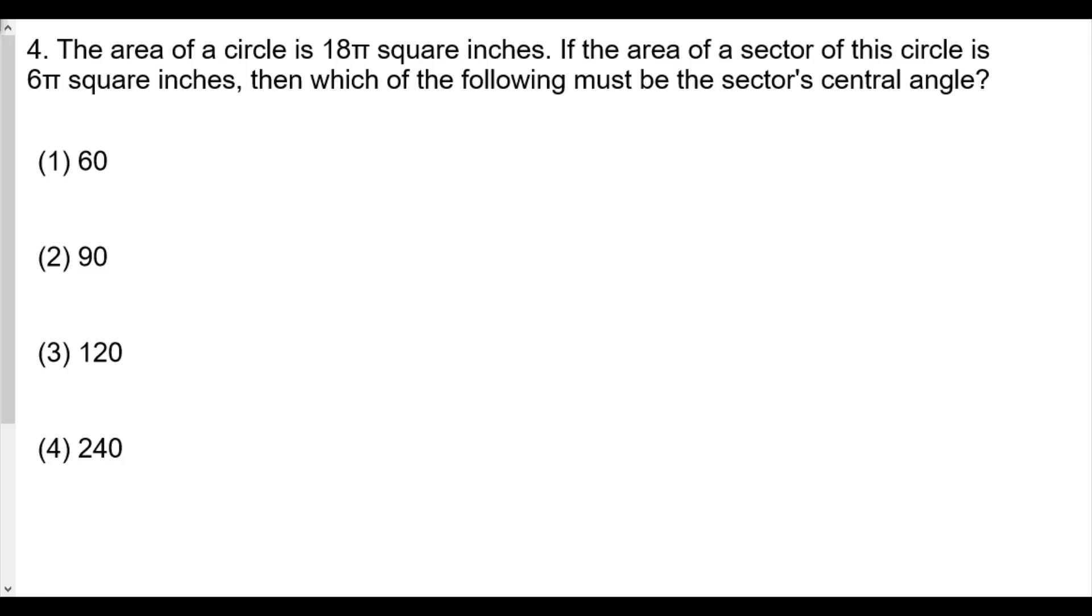So whether we're trying to find the arc length or the area of the sector, a lot of it has to do with the central angle and therefore the part of the circle we're dealing with. Here, question number four, the area of the circle is 18π square inches, so we know the area. And the area of the sector of the circle is going to be 6π square inches. Then which of the following must be the sector's central angle? Well, here we're trying to find the area of the sector.